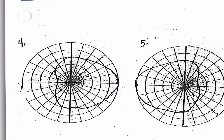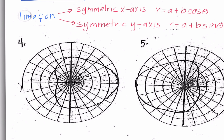Moving on to number four. This time this does not look like a rose — it looks like a limaçon, and more specifically this is one of our dimpled limaçons, but that really doesn't matter. Regardless of the type of limaçon, we're going to find the equation using the same method. We need to pay attention to what axis the limaçon is symmetric on. If it's symmetric on the x-axis, then it is a cosine graph: r equals a plus b cosine θ. If it's symmetric on the y-axis, then it would be r equals a plus b sine θ.